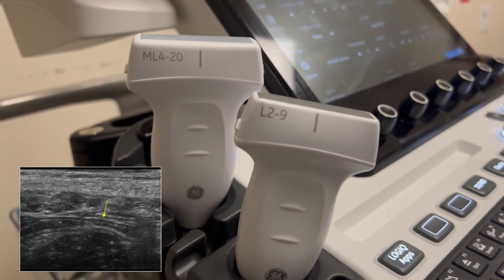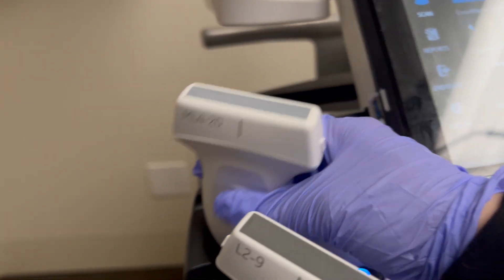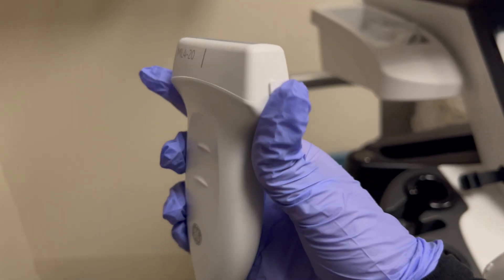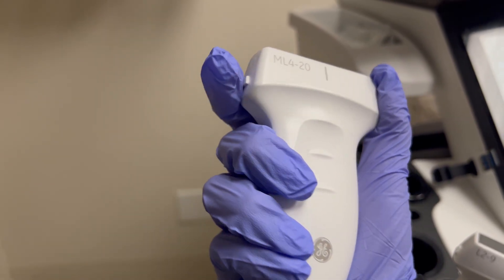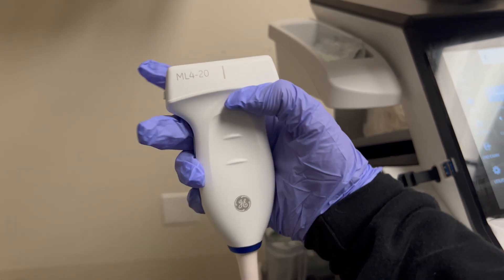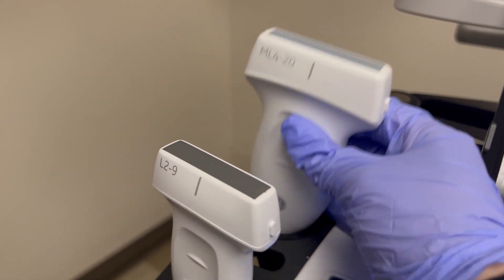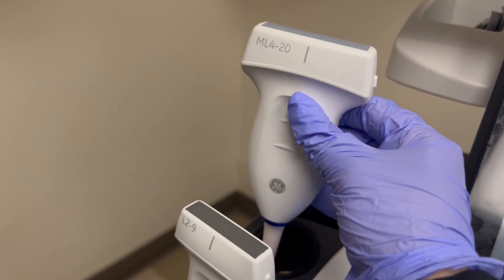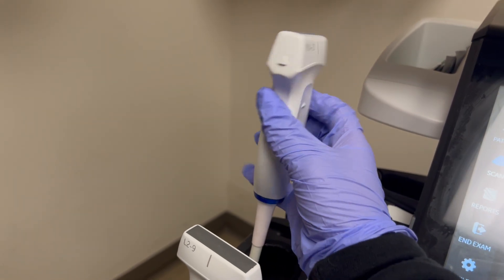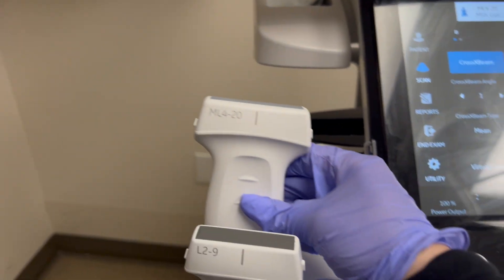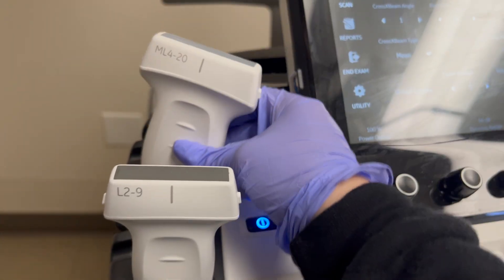These two probes are very important for superficial items. Now you can see that this probe is much longer than the linear nine probe. Once again to use this probe like the other probes, the notch will be to the patient's right for transverse and the notch will point towards the patient's head for sagittal images.